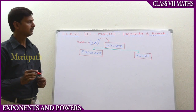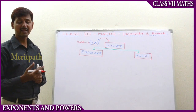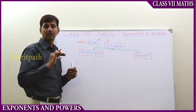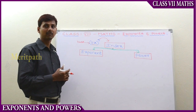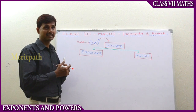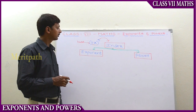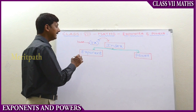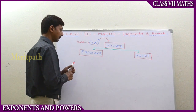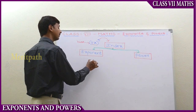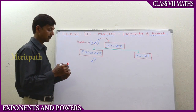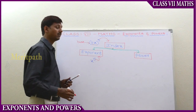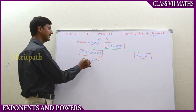The index can be anything. The base can have both a numerical value and a variable present, as in 2x to the power of 5. For example, if the base is x — that is, the base is a variable — raised to the power of 5, then 5 is called as exponent and x is the base.